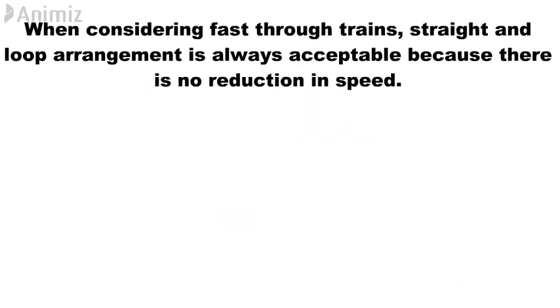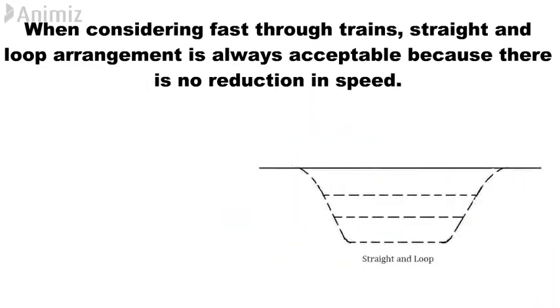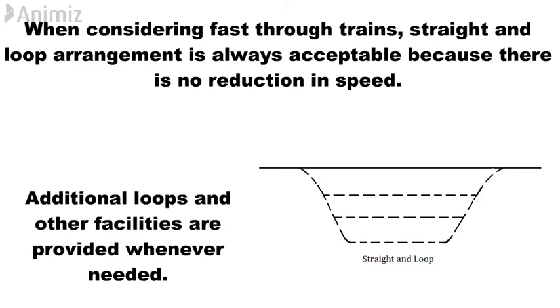When considering fast through trains, straight and loop arrangement is always acceptable because there is no reduction in speed. Additional loops and other facilities are provided whenever needed.